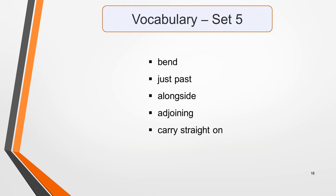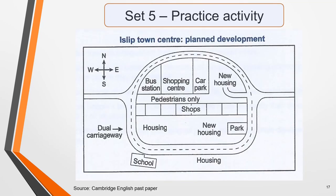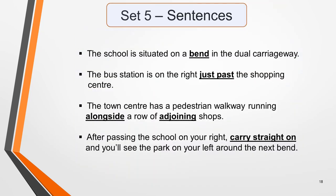Vocabulary set 5: bend, just past, alongside, adjoining, carry straight on. Here's the last set of sentences. The school is situated on a bend in the dual carriageway. The bus station is on the right just past the shopping centre. The town centre has a pedestrian walkway running alongside a row of adjoining shops. After passing the school on your right, carry straight on and you'll see the park on your left around the next bend. Pause one final time to study them.